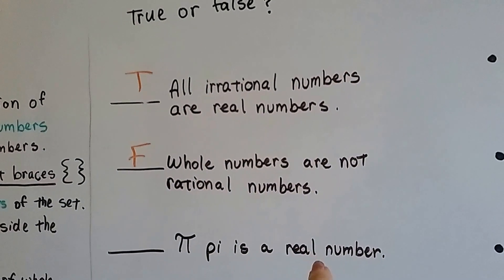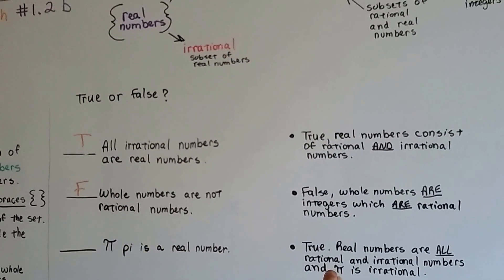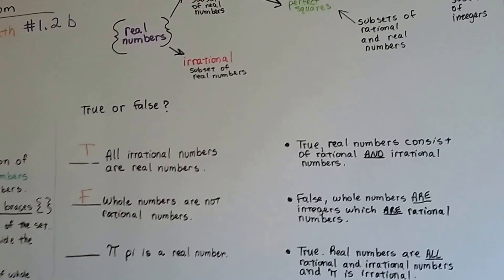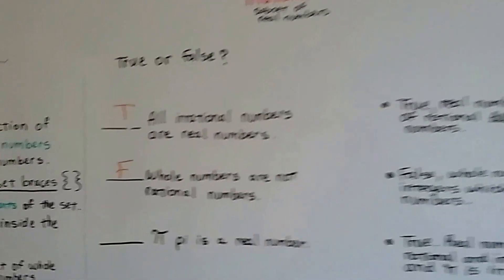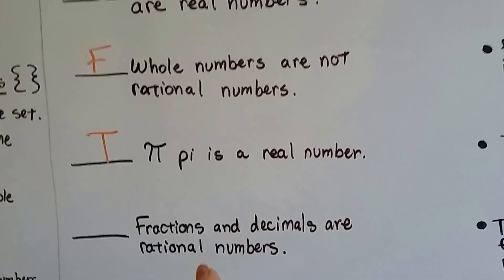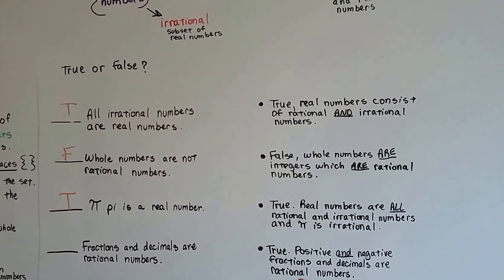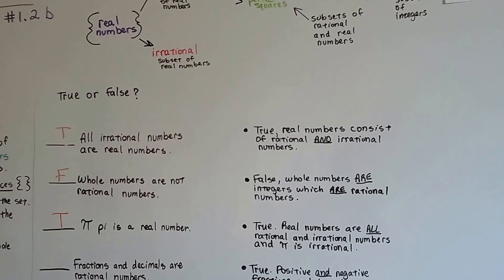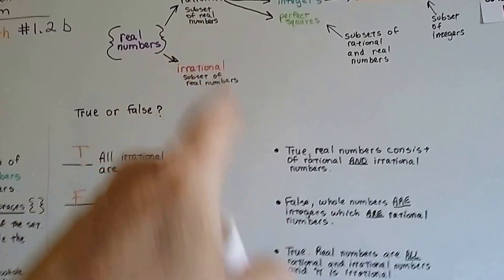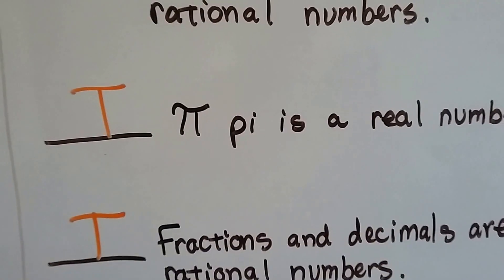Pi is a real number — is that true? Yes, that's true. Real numbers are all rational and irrational numbers, and pi is irrational, so it's a real number. Fractions and decimals are rational numbers — that's true, because positive and negative fractions and decimals are rational numbers. They come off the branch of the rational numbers from the tree.